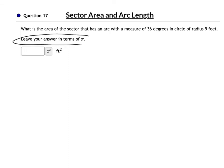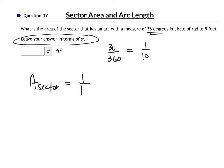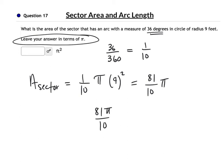In question 17, we're leaving our answer in terms of pi. Our angle is 36 degrees — that's 36 over 360 of the circle, which is 1 tenth of the circle. The area of the sector is 1 tenth of pi r squared. We've got 9 squared, giving 81 over 10 pi. You can also write that as 81 pi over 10. Since 81 and 10 have no common factors, that is the answer — in feet squared.